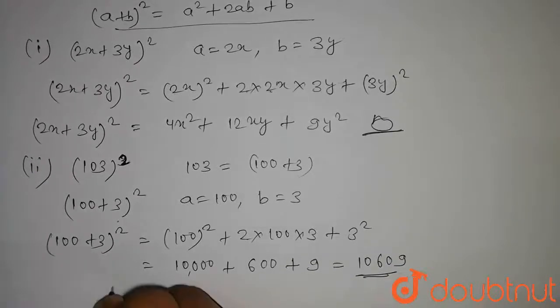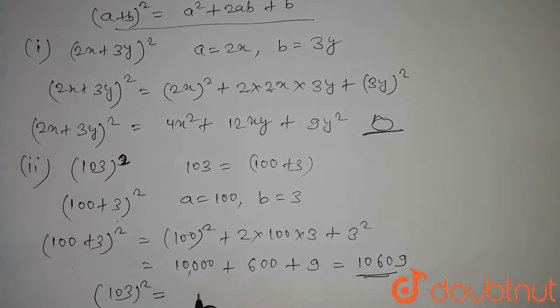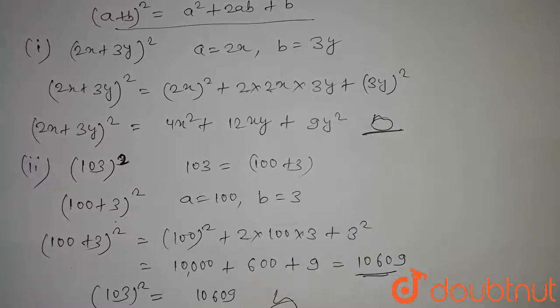Hence, 103² whole square will be equal to 10,609. This is our answer. Thank you.